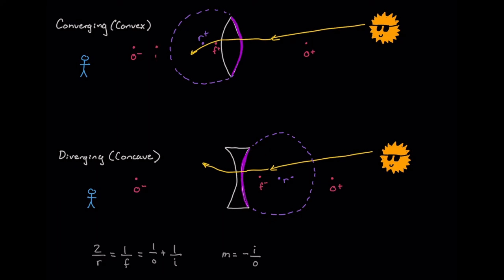So if we have an image on the side that we expect the image to be on, it would be positive, or a real image. Now if the image is over on this side, where we don't expect it to be, it would be negative, or a virtual image.